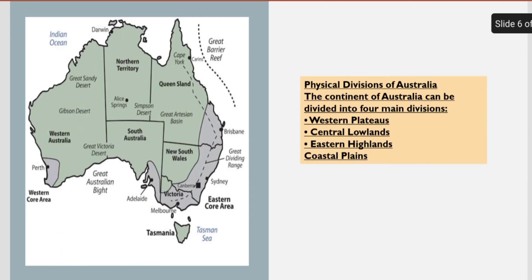Now I want to discuss about the physical divisions of Australia. The continent of Australia can be divided into 4 main divisions: the first is the Western Plateau, the second is the Central Lowlands, the third is the Eastern Highlands, and the fourth is the Coastal Plains.